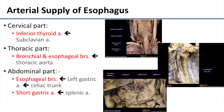The abdominal part of the esophagus is ultimately supplied by branches of the celiac trunk — specifically esophageal branches from the left gastric artery, which is one of the main branches of the celiac trunk, as well as short gastric arteries from the splenic artery, another one of the main branches of the celiac trunk.